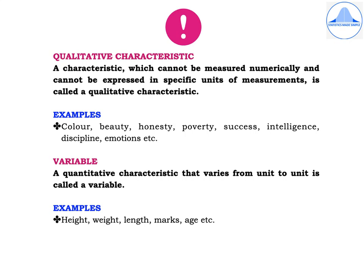A variable is a quantitative characteristic that varies from unit to unit. Examples include height, weight, length, marks, and age.